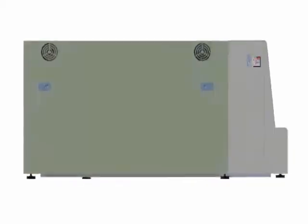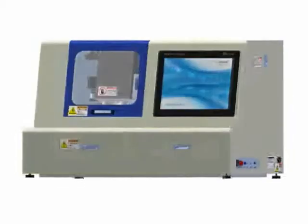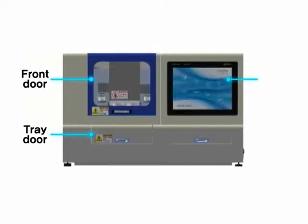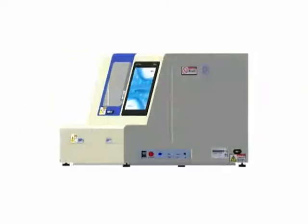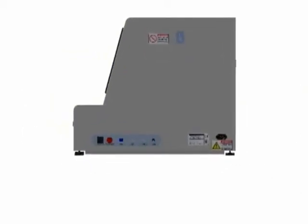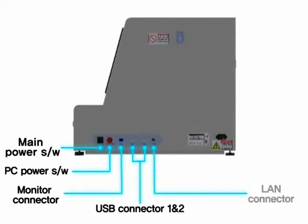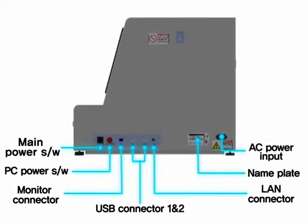Let me introduce the names and images of this instrument. On the front side are the front door, tray door, touchscreen, and drawer for the keyboard. On the right side are the main power switch, PC power switch, monitor connector, USB connector, LAN connector, nameplate, and AC power input part.